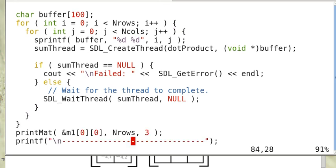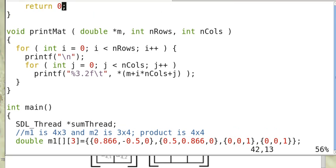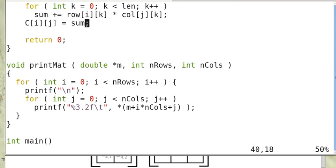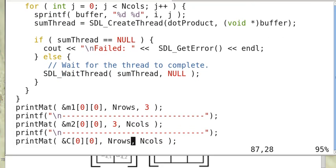So when this is done, then the product will be saved in C[i][j]. So that's our final matrix. And then we print out the matrices.